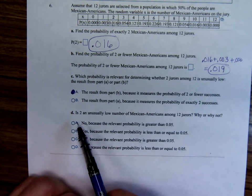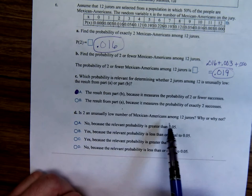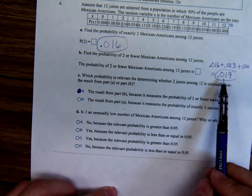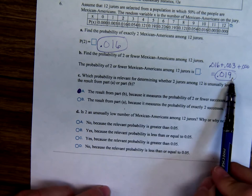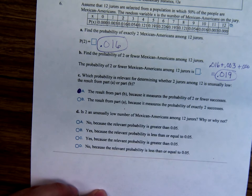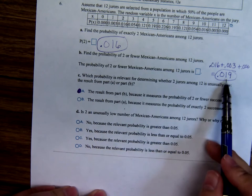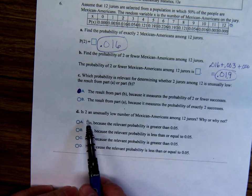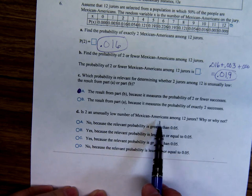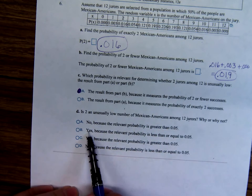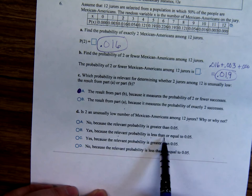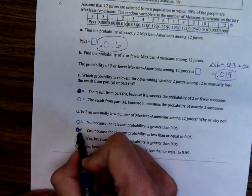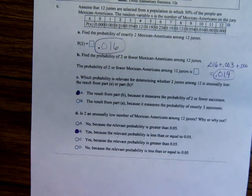Is two an unusually low number of Mexican-American jurors among 12? Why or why not? Well, yes, it's a very small probability to have two or fewer jurors. And so, but notice it's much, it's not anywhere close to five percent. So, is two an unusually low number of Mexican-Americans among 12 jurors? Yes, because the relevant probability is less than, sure not equal, but it's less than or equal to point zero five. OK, so that would be B there.